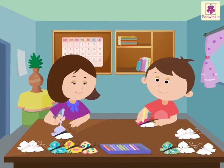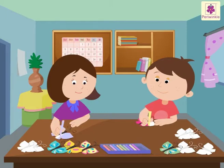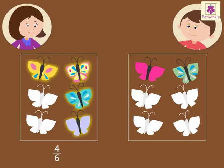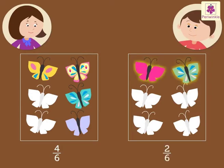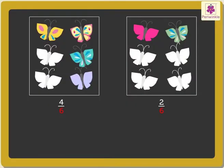Next round is coloring the butterflies. Each one of them has six butterflies to color. Anaya painted four-sixths of the butterflies and Andy painted two-sixths of the butterflies. Let's find out who colored more. As the denominators are the same, we compare the numerators.